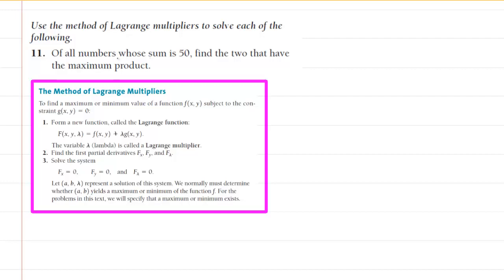We are asked to use the method of Lagrange multipliers to determine of all numbers whose sum is 50, the two that have the maximum product.